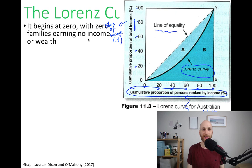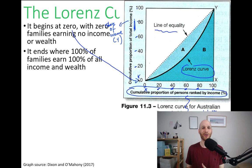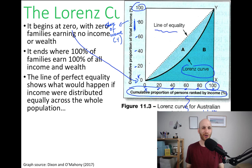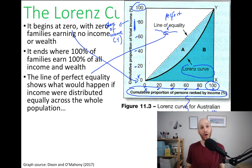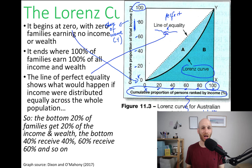The curve starts at 0, where no one in the population has any share of income, and at the far end, 100% of families earn 100% of all income in society. The line of perfect equality shows what would happen if income or wealth were distributed equally across the whole population — the bottom 20% get 20% of income, the bottom 40% receive 40%, and so on. That is what the line of perfect equality shows us.